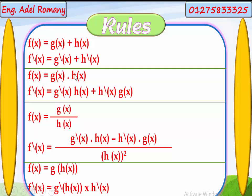Rule 2 — product rule: if f of x equals g of x times h of x, then f dash of x equals g dash of x times h of x plus h dash of x times g of x. Rule 3 — quotient rule: f of x equals g of x over h of x, so f dash of x equals g dash times h of x minus h dash times g of x, all over h of x to the power of 2. Rule 4 — chain rule: if f of x equals g of h of x, a function inside a function, then f dash of x equals g dash of h of x times h dash of x.